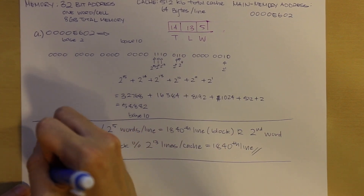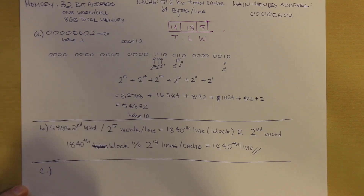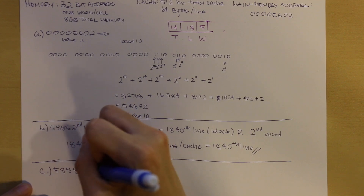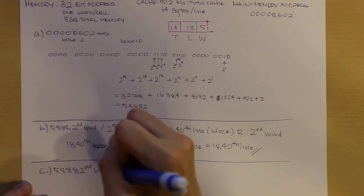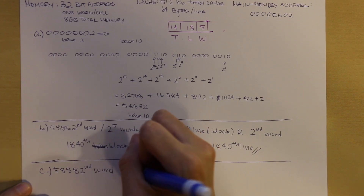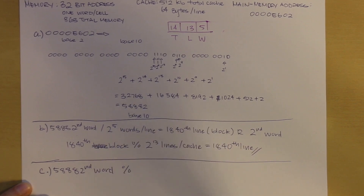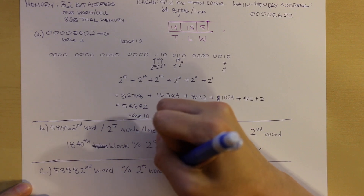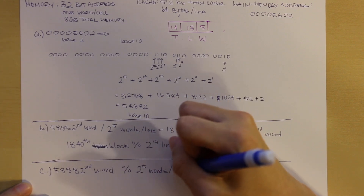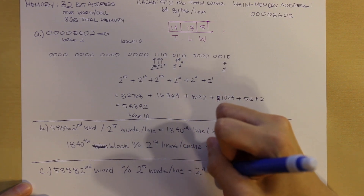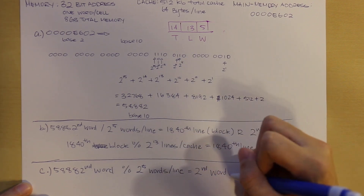To find which word it is in the line, we take our 58,882nd word and compute it mod 2^5 words per line, which gives us 2 — meaning that is our second word.